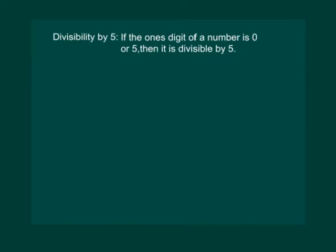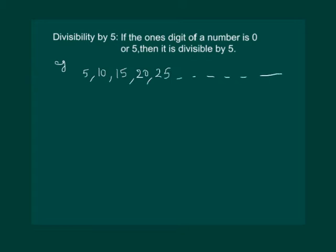Divisibility by 5. If the 1's digit of a number is 0 or 5, then it is divisible by 5. Let us look at the multiples of 5: we have 5, 10, 15, 20, 25, and so on. We can see that the 1's digit is either 5 or 0, and no other digit ever appears in this list.